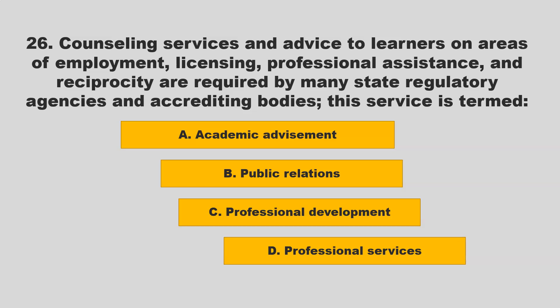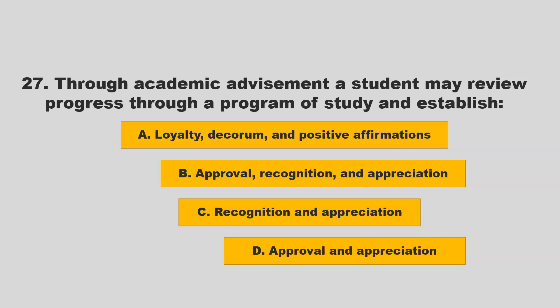Counseling services and advice to learners on areas of employment, licensing, professional assistance, and reciprocity are required by many state regulatory agencies and accrediting bodies. This service is termed academic advisement. If you chose A, academic advisement, you are correct. Through academic advisement, a student may review progress through a program of study and establish approval, recognition, and appreciation.